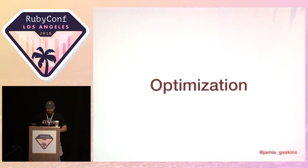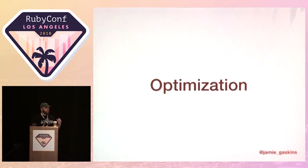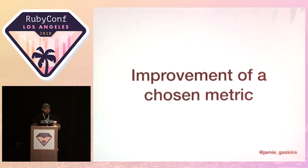When we talk about optimization, we need to understand what that means. We need to turn this fuzzy term into something more concrete that will allow us to communicate about it better. At a high level, optimization is about improving some metric that you've chosen.